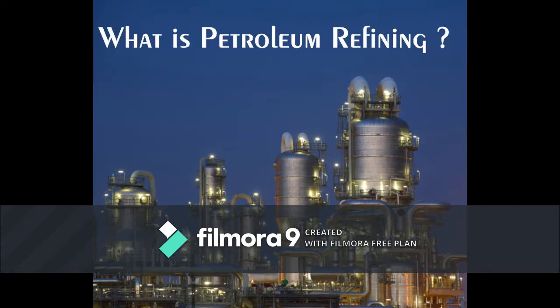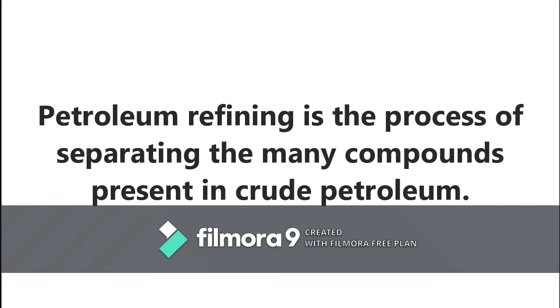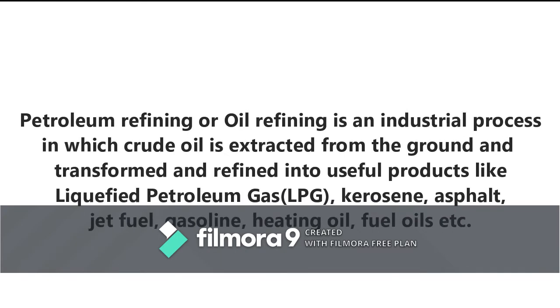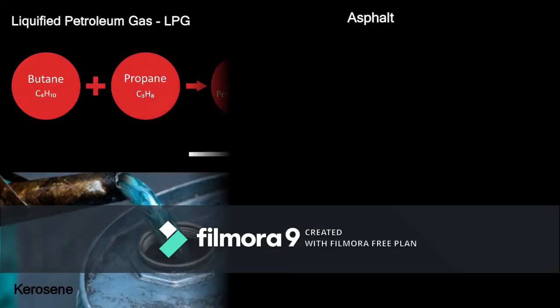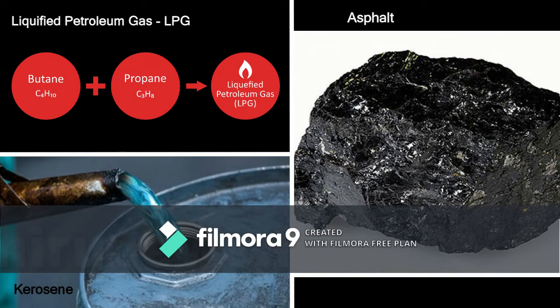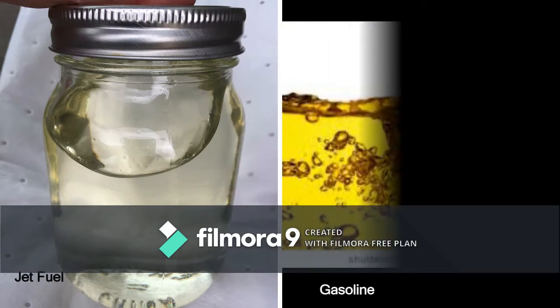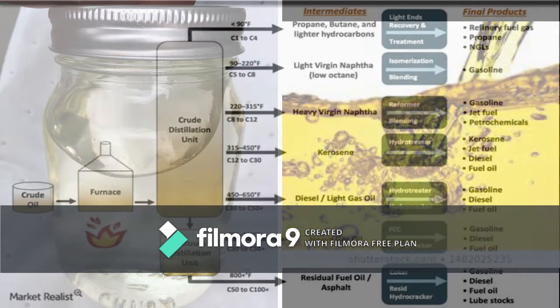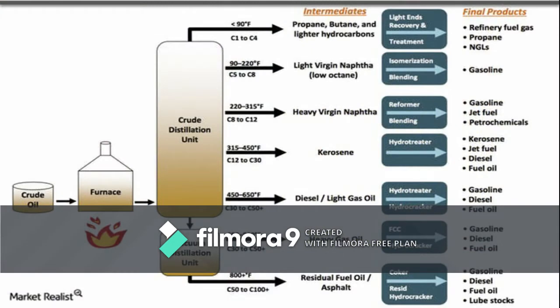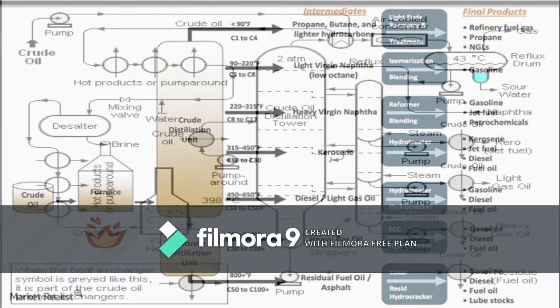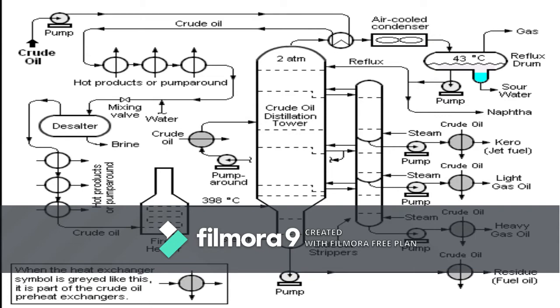What is petroleum refining? Petroleum refining is the process of separating the many compounds present in crude petroleum. It is an industrial process in which crude oil is extracted from the ground and transformed into useful products like LPG, kerosene, asphalt, jet fuel, gasoline, heating oil, fuel oil, etc. It is a separation as well as a reactive process to yield various valuable products. It consists of two types of processes: unit operations or physical processes, and unit processes or catalytic processes.